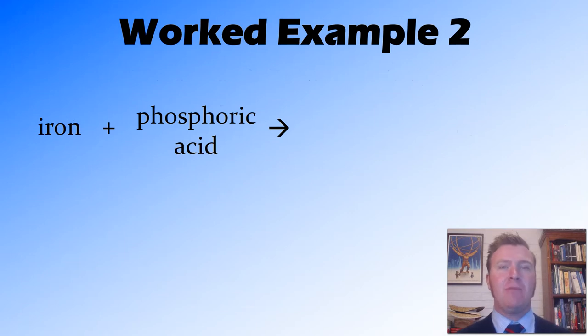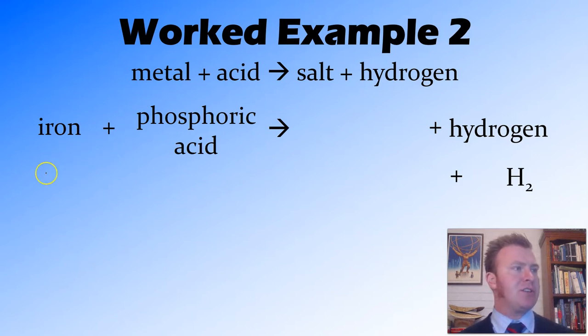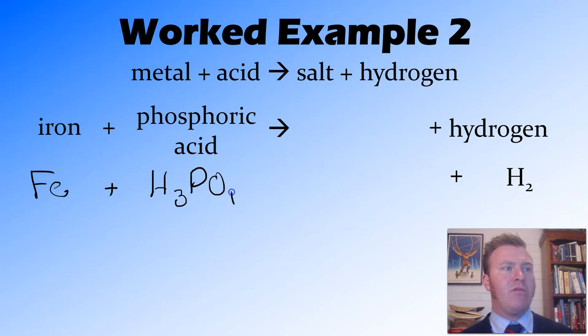So let's have a look at another example. Here we have iron and phosphoric acid. So again, we recognize that this is a metal reacting with an acid. We recall our general equation, which is metal and acid react to form salt and hydrogen. We can put our hydrogen in straight away. Now we'll look at the formula. H2 for hydrogen. Iron is Fe. Phosphoric acid, we look at our acid table and find that it's H3PO4.